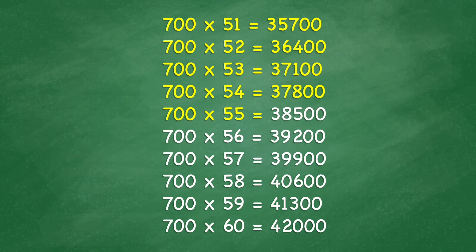700 times 56 equals 39,200. 700 times 57 equals 39,900. 700 times 58 equals 40,600. 700 times 59 equals 41,300.